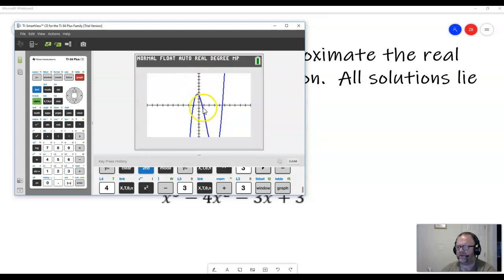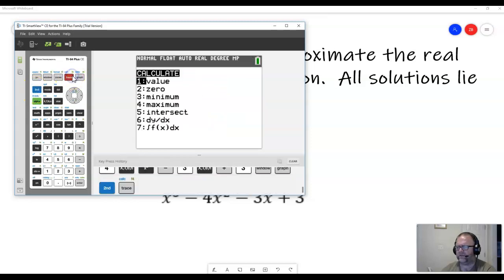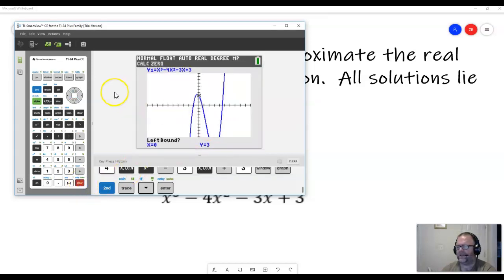So in order to solve this, once I have it up like this, I can hit the calculate function up here. Notice it's in blue, so I have to hit the second key first. So I hit second, calculate. And the solutions of any curve is the same as the zeros. The zeros are the solutions. So I'm going to go down to zero and hit enter.